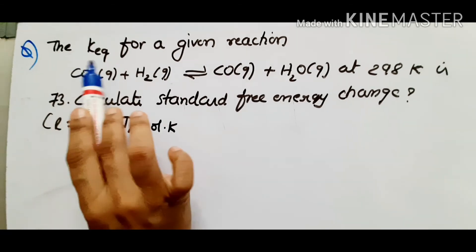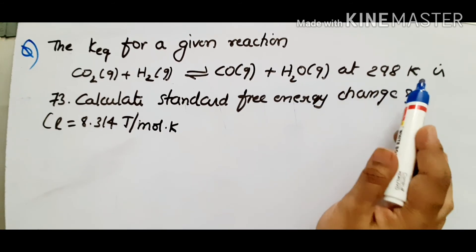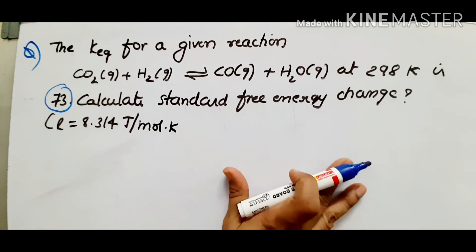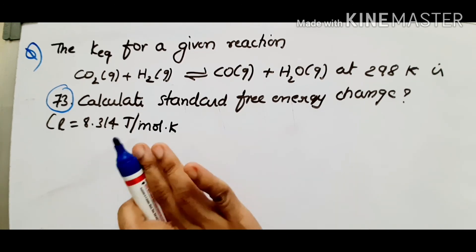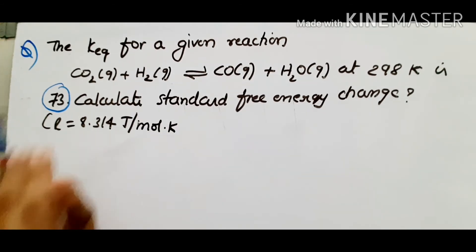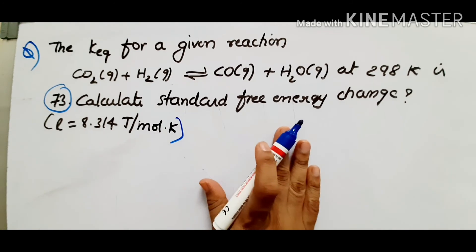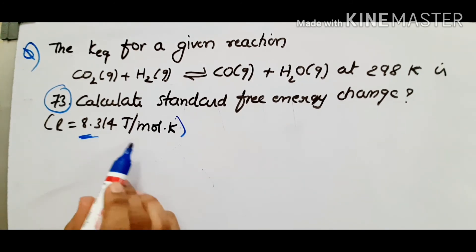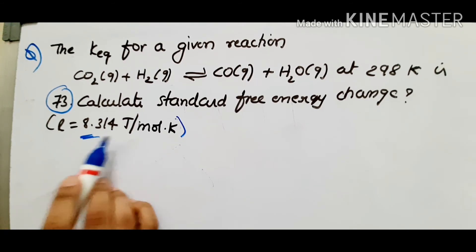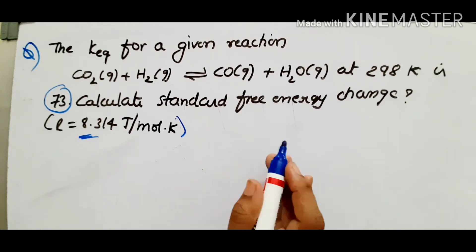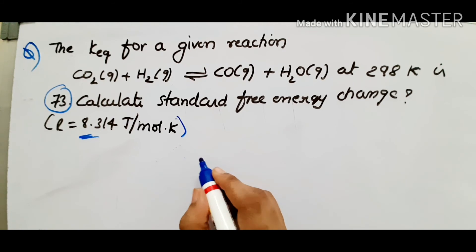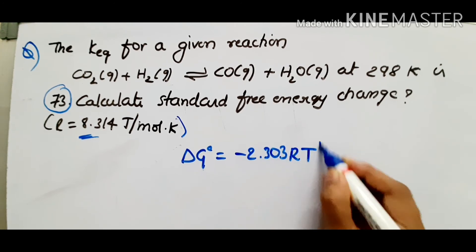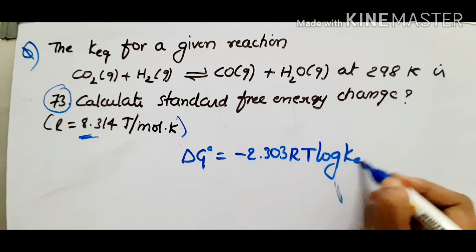Next example question: If equilibrium constant for a given reaction at 298K is 73, then calculate the standard free energy change. Equilibrium constant is 73. Energy in joules. In this example question, R value gas constant is 8.314 joules per mole K. This is the relation: standard free energy change, equilibrium constant relation. Delta G naught equal to minus 2.303 into RT log K equilibrium.